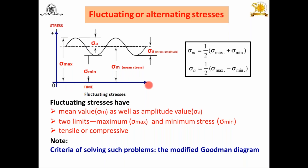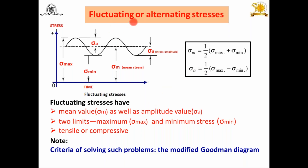For fluctuating and alternating stress, on the y-axis is stress and x-axis is time. Two important parameters are sigma mean and sigma amplitude. Sigma mean equals (sigma max + sigma min) / 2, and amplitude equals (sigma max − sigma min) / 2. These must be found when solving problems associated with fluctuating or alternating stresses.